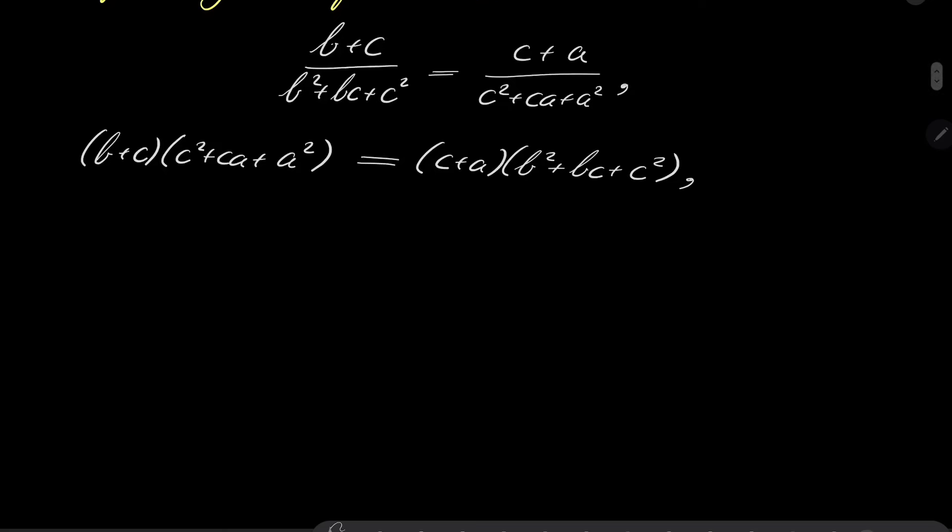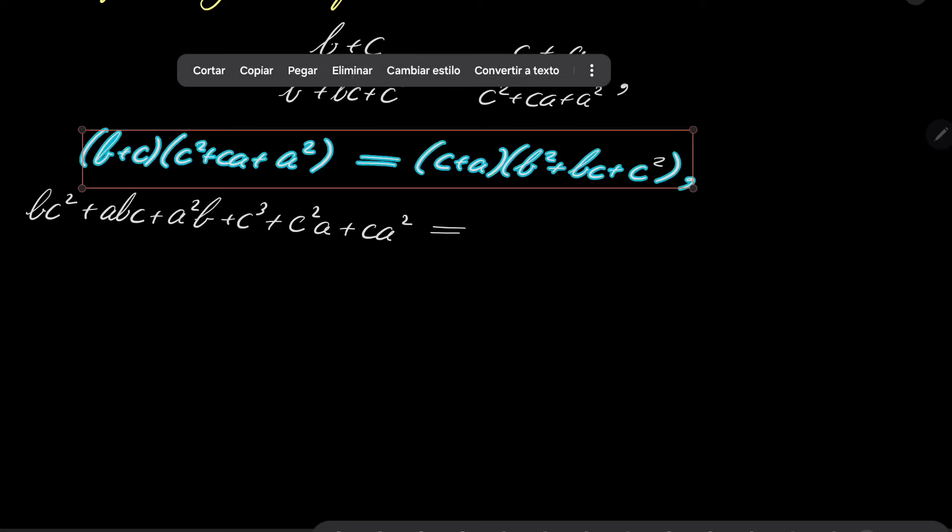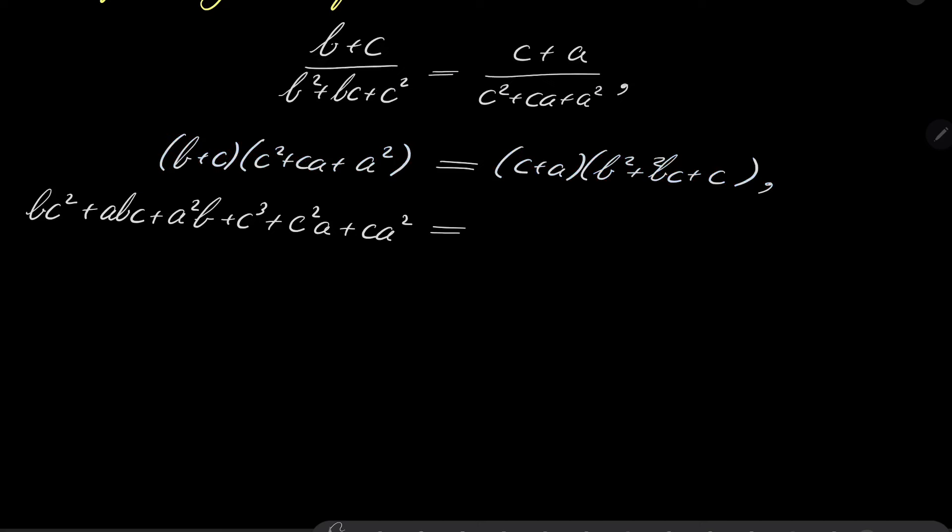And now let's multiply everything. So we have bc² + abc + a²b + c³ + c²a + ca² on one side, and cb² + abc + c³ + ab² + b²a + bc² on the other.